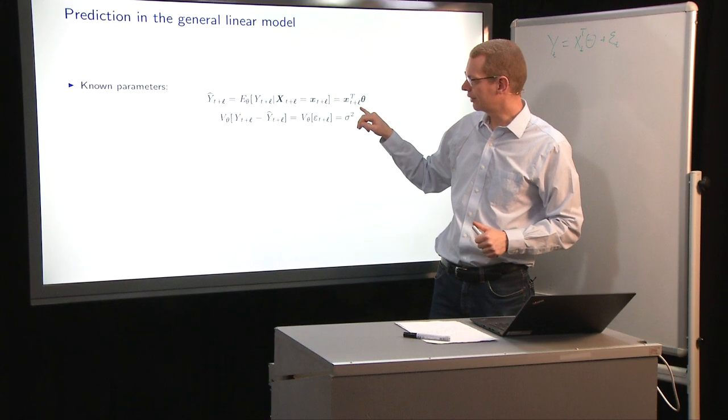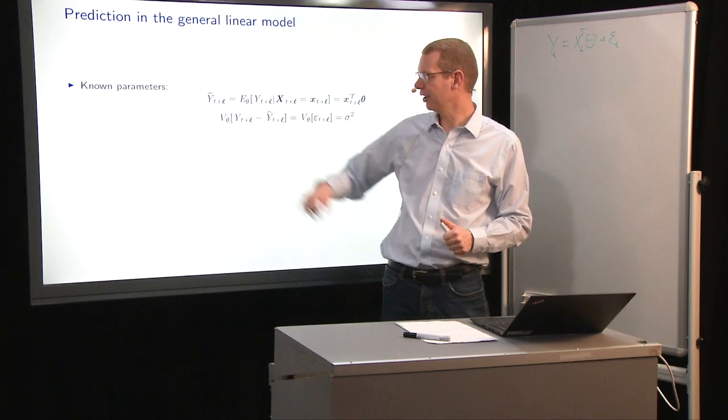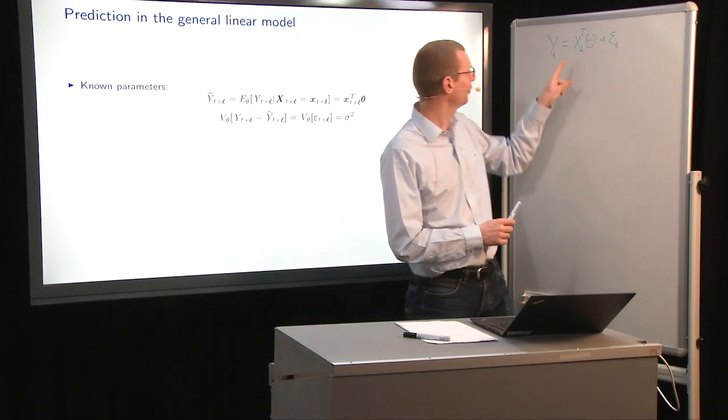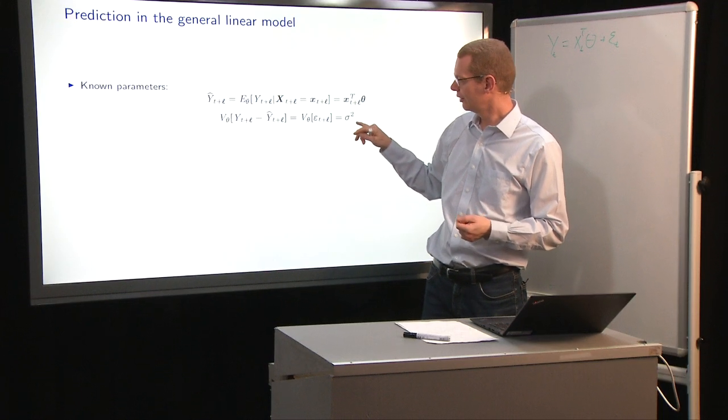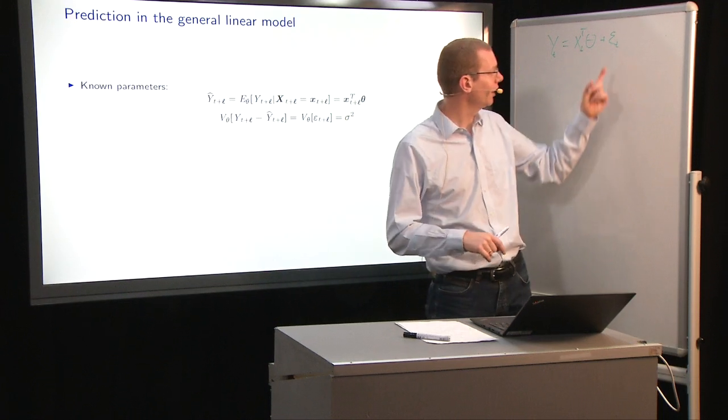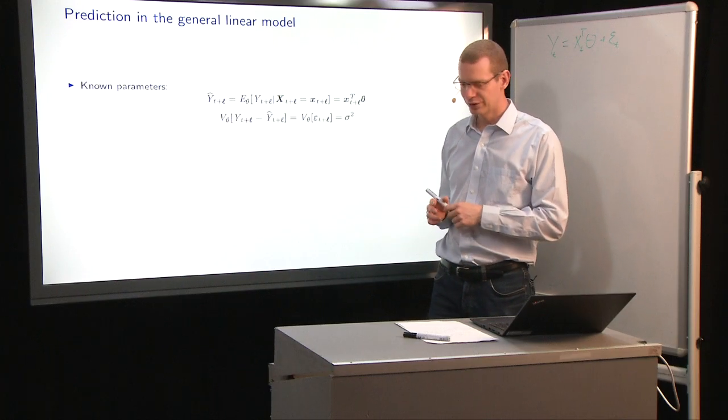Thus, what we have here is the predicted. At that particular time t plus L that we want to make the prediction, we just have to pick the corresponding X for that time point. Then we have the prediction. As I said, the only uncertainty comes from the epsilon out there. So that's an easy one.